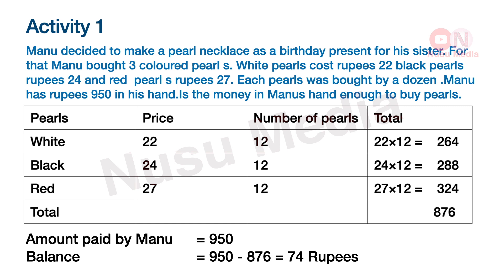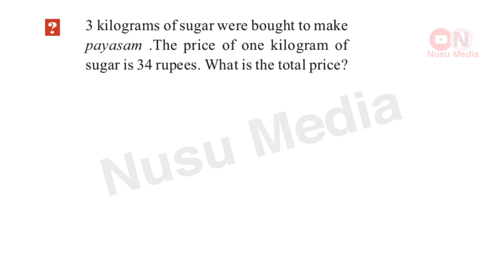The second activity is the test. Let's do it. 3 kilograms of sugar were bought to make payasam. The price of 1 kilogram of sugar is 34 rupees. What is the total price? You have to find the cost of 3 kilograms of sugar. 1 kilogram of sugar is 34 rupees.